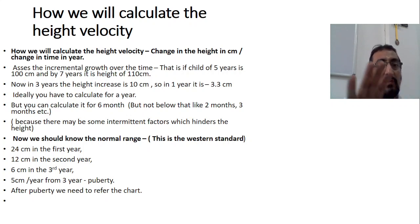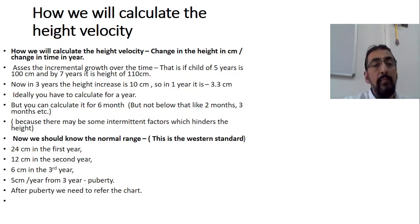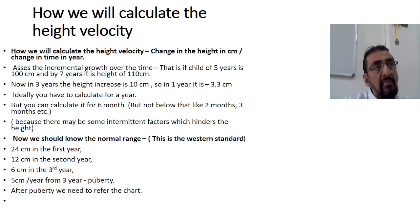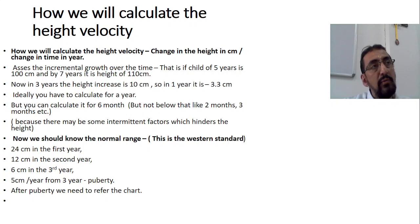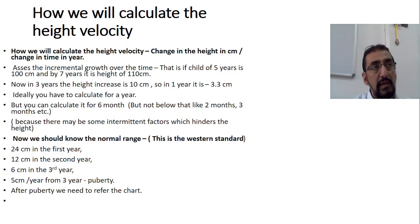The normal height gain rate according to Western standards: 24 cm in the first year of life, 12 cm in the second year, 6 cm in the third year, and 5 cm per year from the third year to puberty. So a child coming at age five should gain at least 5 cm per year until puberty. After puberty you need to refer to the chart, as it is different.